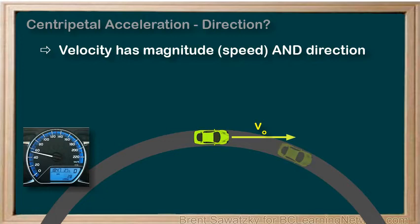Let's pick another point along the track. Again, we can draw the vector representing the car's velocity at this exact point. It has the same length as the other vector — that is, the car is still going 50 km per hour — but in a different direction now.